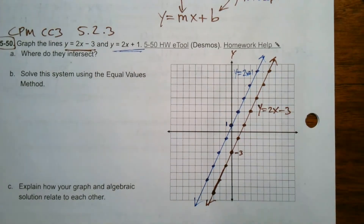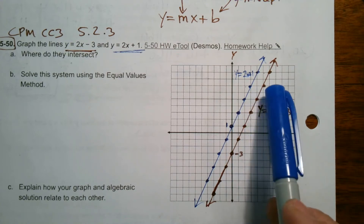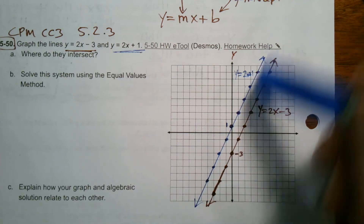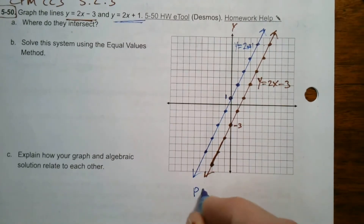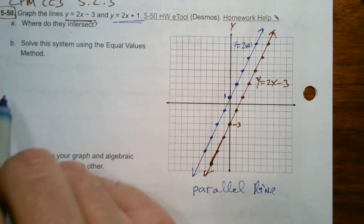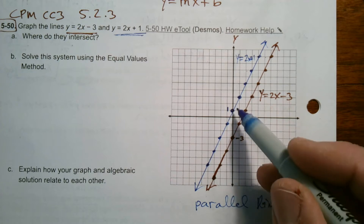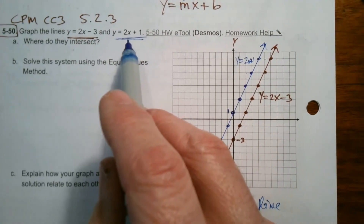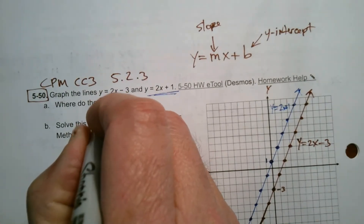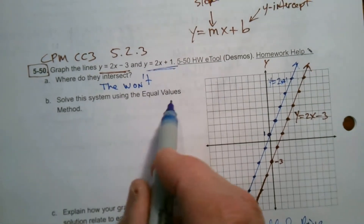Now the question asks where do they intersect? If I look at my two lines, I don't see them intersecting. If they have the exact same growth rate, the points will continue to grow alongside each other but never cross. These are called parallel lines. They have the same slope but different y-intercepts, so they're not the exact same line and they'll never cross — different equations, different sets of solutions, but they'll never intersect.